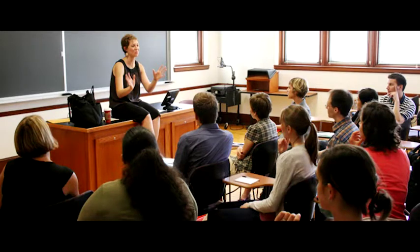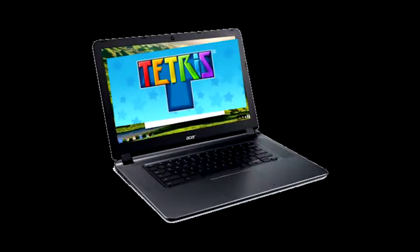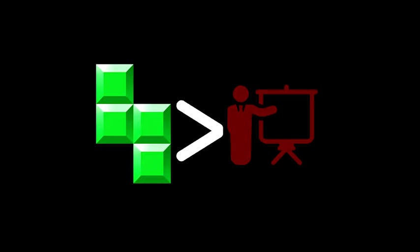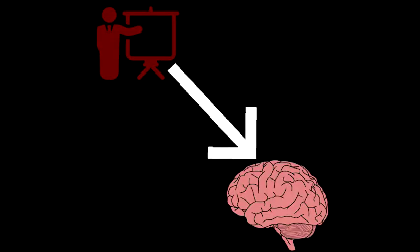Selective attention means that we focus on one thing over another and therefore do not remember the other thing. For example, in class a teacher is giving a lecture, but you are on your Chromebook playing Tetris. Because you are focusing on Tetris more than the lecture, you only end up encoding and storing small bits of information from the lecture in your memory.